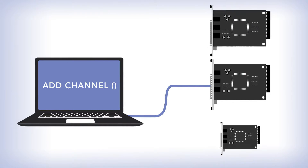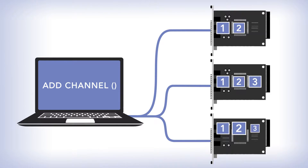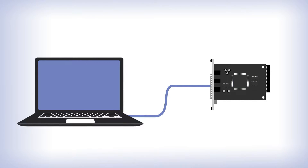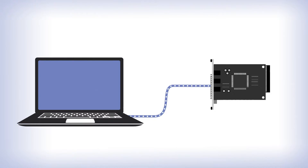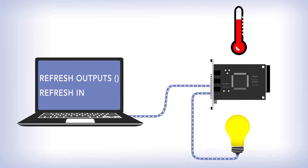You can collect data from an arbitrary number of I/O boards and a variable number of channels per I/O board. To get data and send data from all the channels in the memory map, you simply call refresh. If you wish to generate outputs and then read inputs, you can call refresh outputs and then refresh inputs separately. It's that simple.